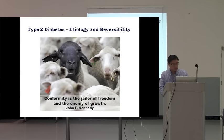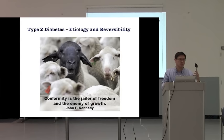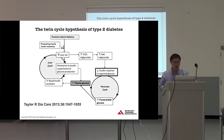This talk is about type 2 diabetes — specifically its etiology and reversibility. This is a whole different way of approaching type 2 diabetes, different from how we've approached it before. You have to understand what really causes type 2 diabetes in order to reverse the disease, and that's something we've never really talked about before: reversing type 2 diabetes. This is the paper it comes from.